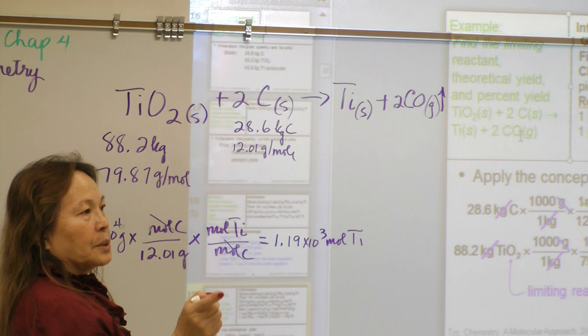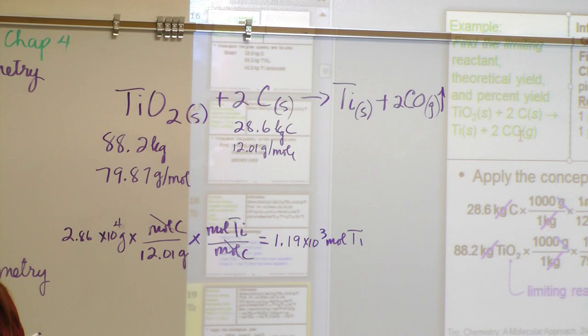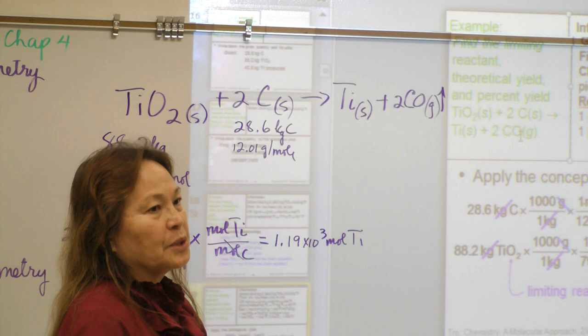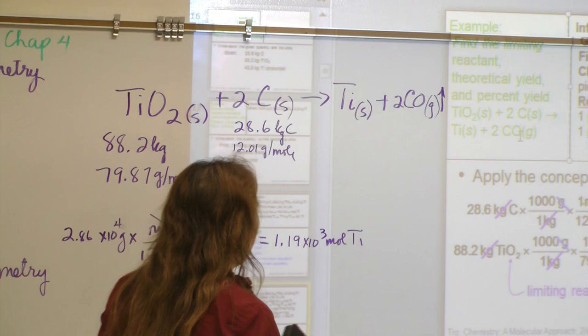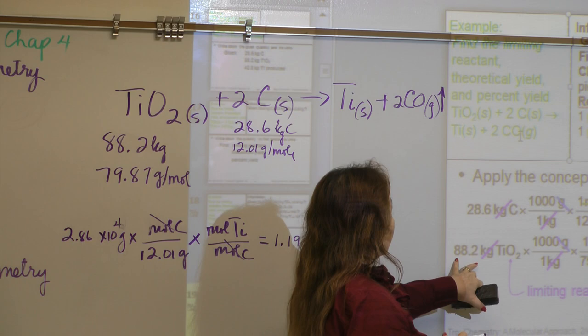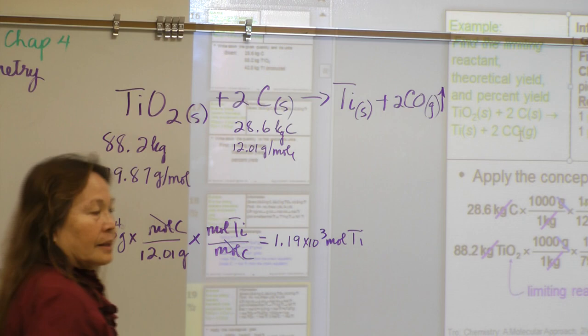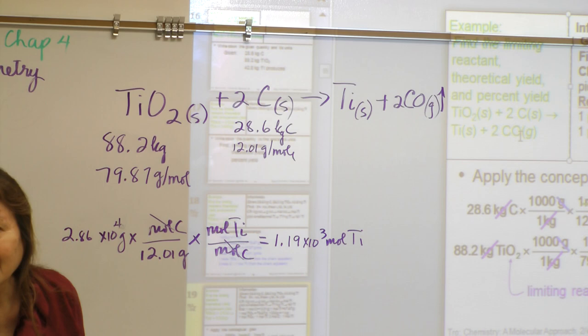When you multiply, what's easier for you — this way or that way in your calculator? Looking at our results, the given amount of titanium dioxide is our limiting reactant because we can only make 1.10 times 10 to the third moles of titanium.